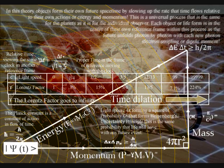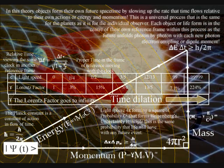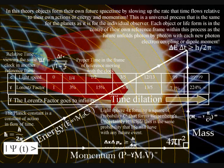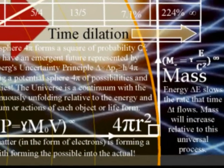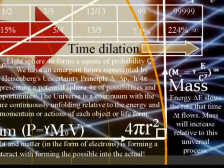Objects form their own time by slowing up the rate that time flows relative to their energy and momentum. Gravity is not a real force at all. Objects just freefall towards the greatest energy because it has the greatest time dilation, or the slowest rate the time flows.